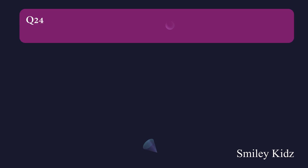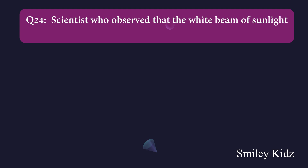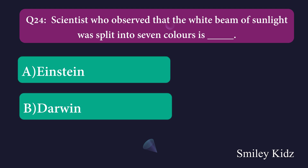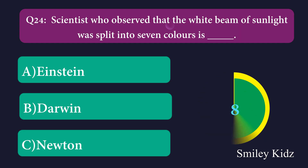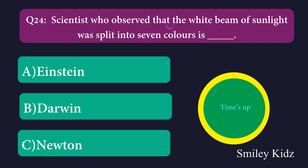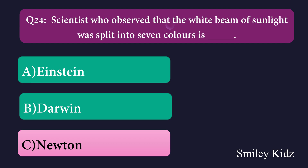Question number twenty-four: The scientist who observed that the white beam of sunlight was split into seven colors is dash. Option A: Einstein, Option B: Darwin, Option C: Newton. The right answer is Newton.